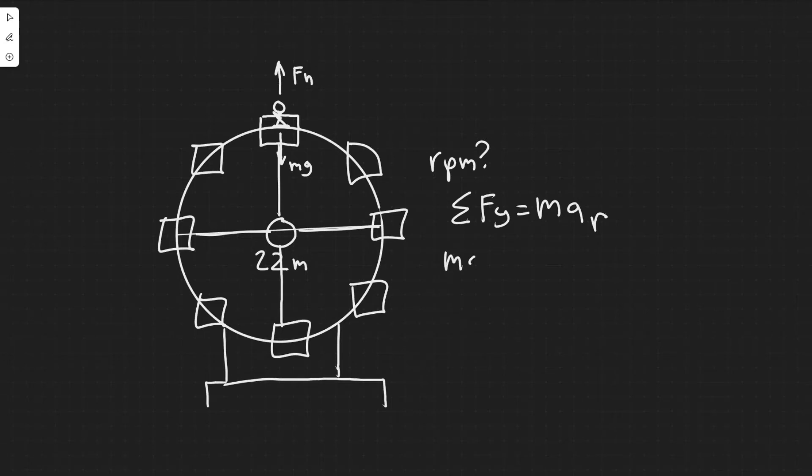And so ma_r is going to be equal to the sum of the forces. Now we have two forces, mg and F_n. And when you do a problem like this where you're rotating, you want to call the forces that are pointing towards the inside of the circle positive, and outside would be negative. So this would be mg minus F_n.